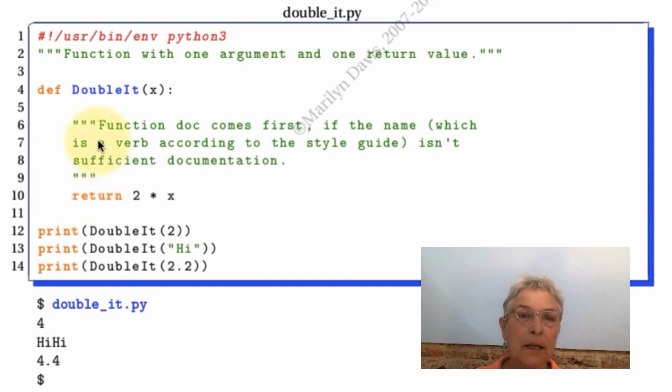DoubleIt is blue. Something comes in, two asterisk something goes out. If you put in a two you get a four. You put in a hi you get a hi hi. So nobody's checking the type that goes in. We can't declare a type. Four point four comes out when you put in a float. So all three of these work because all three of them have the asterisk defined.